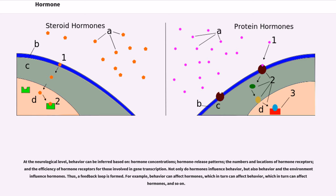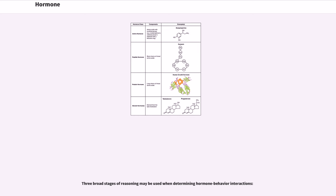At the neurological level, behavior can be inferred based on hormone concentrations, hormone release patterns, the numbers and locations of hormone receptors, and the efficiency of hormone receptors for those involved in gene transcription. Not only do hormones influence behavior, but also behavior and the environment influence hormones. Thus, a feedback loop is formed. For example, behavior can affect hormones, which in turn can affect behavior, which in turn can affect hormones, and so on.